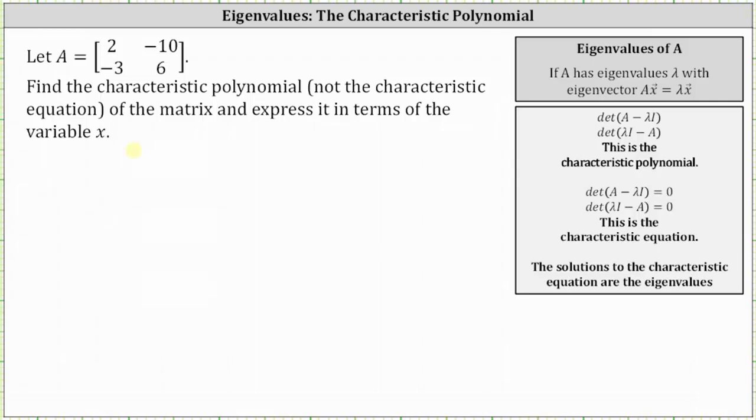To determine the characteristic polynomial, we need to find the determinant of the difference of matrix A and lambda times the identity matrix. But we'll be using the variable x instead of lambda. We could also use the alternative form shown here below. I'm going to go ahead and use this first form.